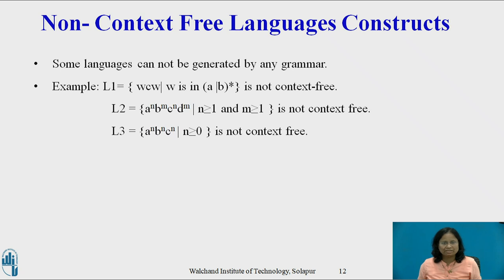Non-context-free Language Constructs: There are some language constructions in programming languages which are not context-free, meaning we cannot write a context-free grammar for these constructions. Example: L1 = {wcw | w ∈ (a|b)*}. This language L1 consists of all words composed of a repeated string of a's and b's separated by a c. This language is not context-free and abstracts the problem of checking that identifiers are declared before their use, where the first w represents the declaration and the second w represents its use.